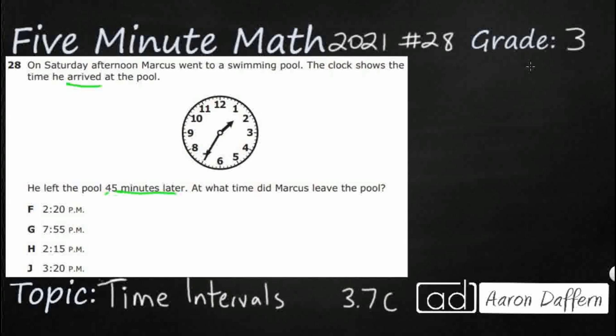So first let's figure out what time he arrived. We've got our hour hand is between 1 and 2, so that's going to be 1 something. And remember that these big numbers are sets of 5. So we've got 5, 10, 15, 20, 25, 30. So here's 35. So 7 times 5 is 35. So that's when he gets there is 1:35.